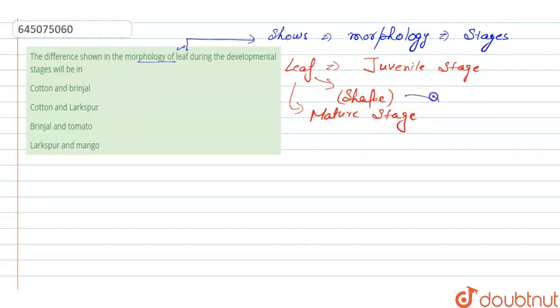This kind of feature that occurs in leaf, changing the morphology during developmental stages, is termed as plasticity. In leaf we can see heterophylly.